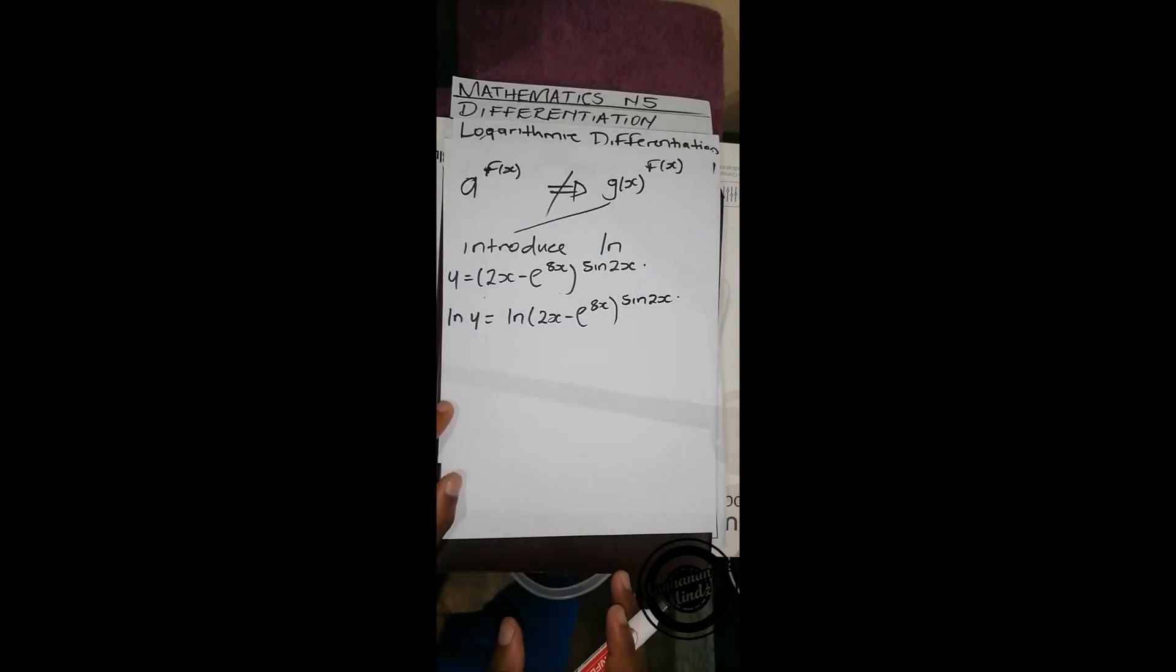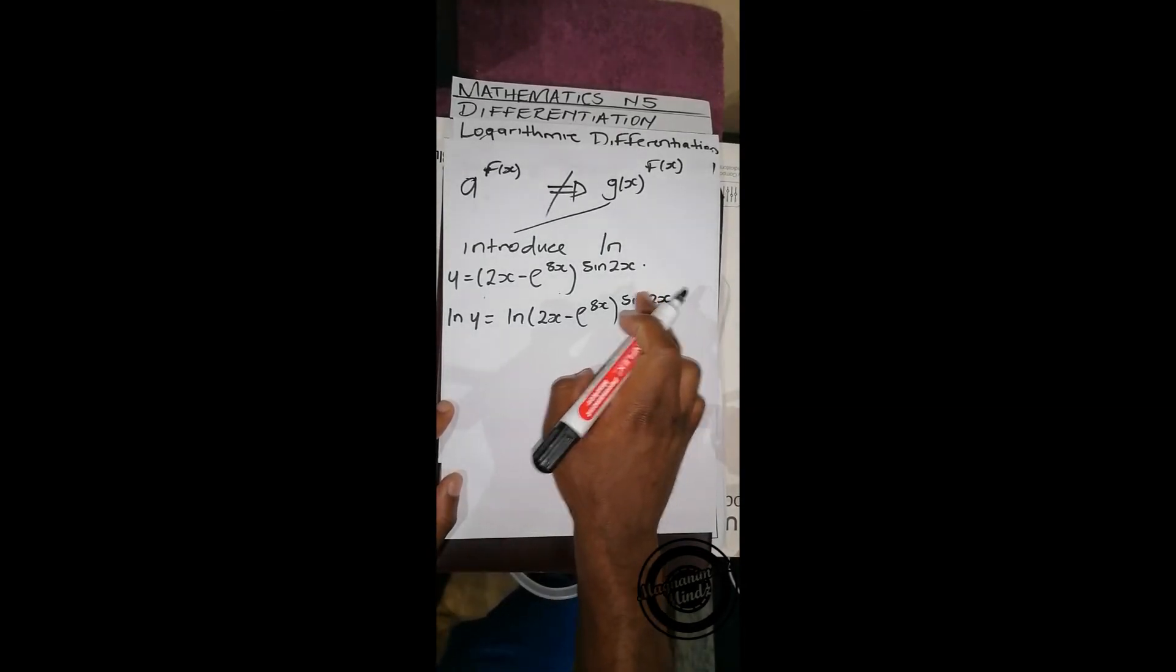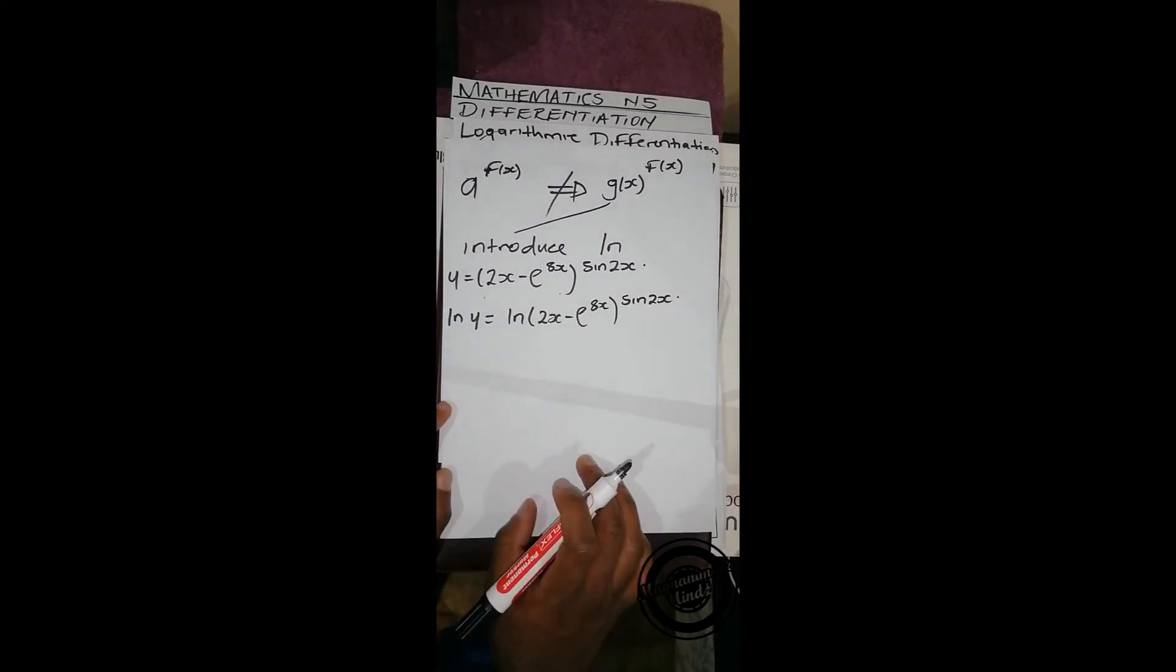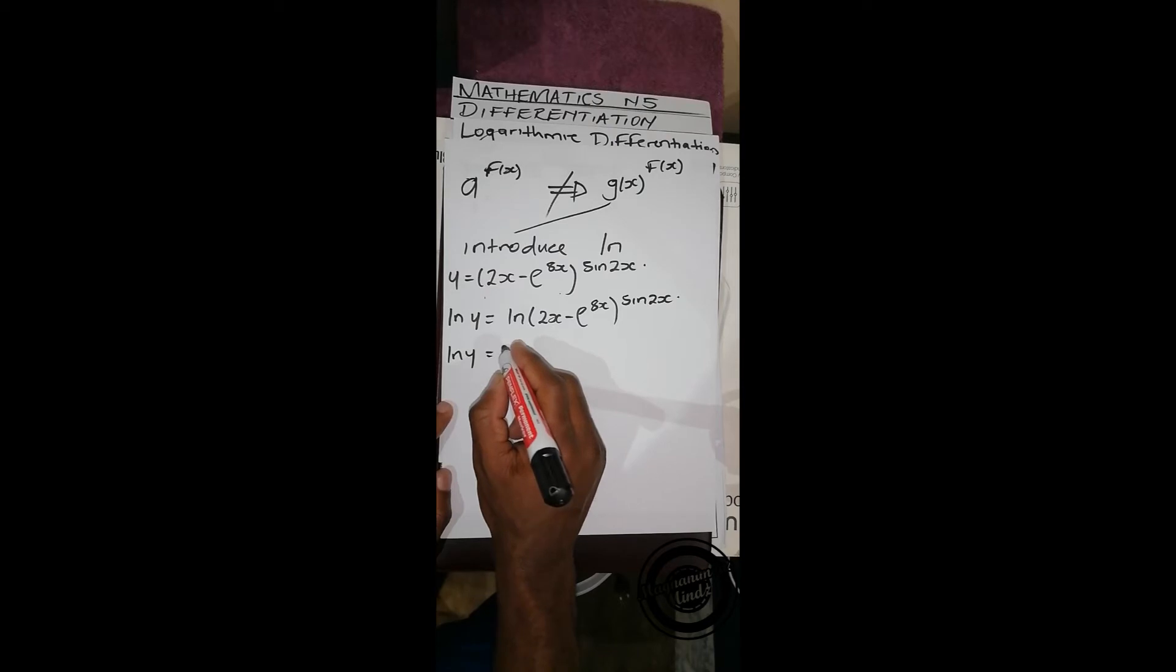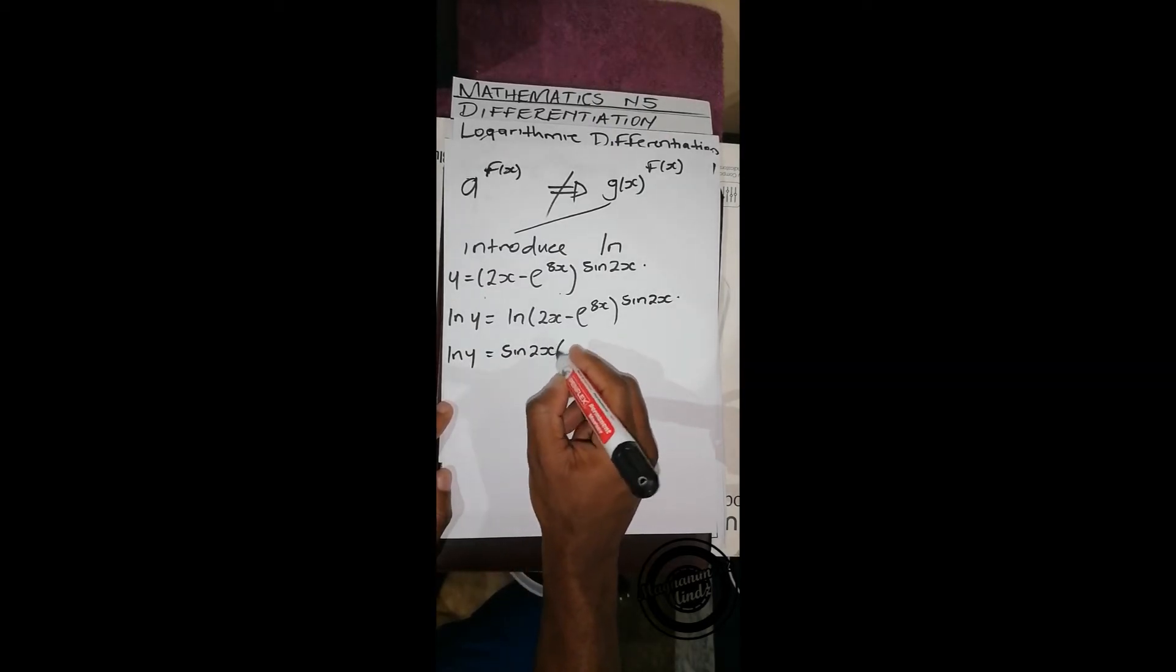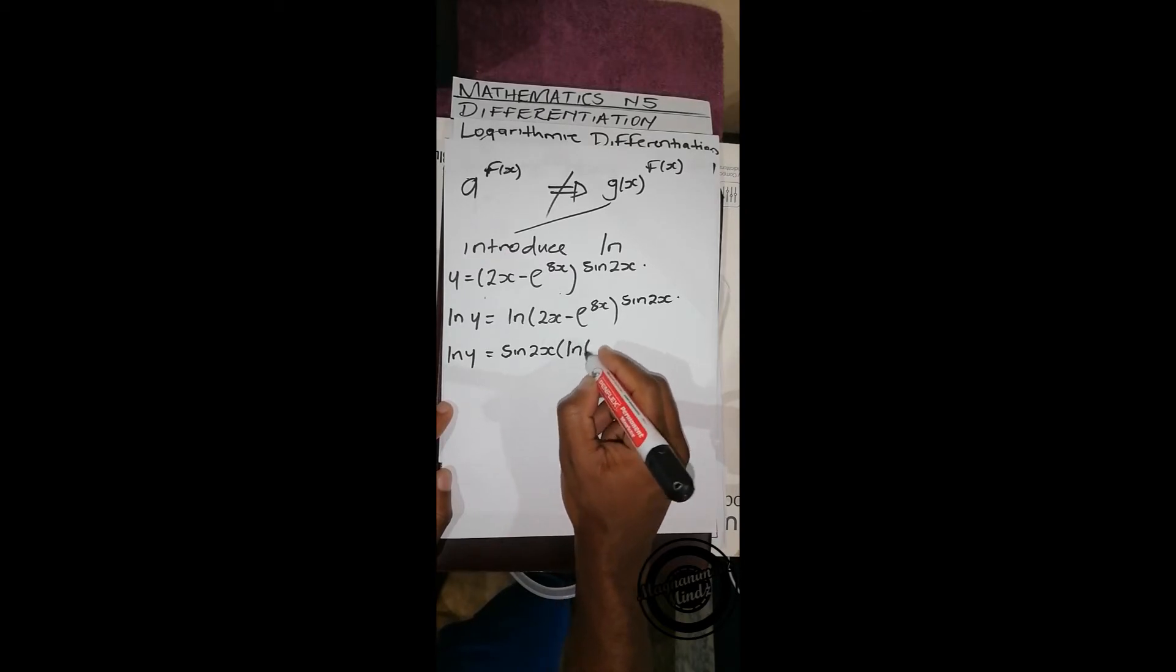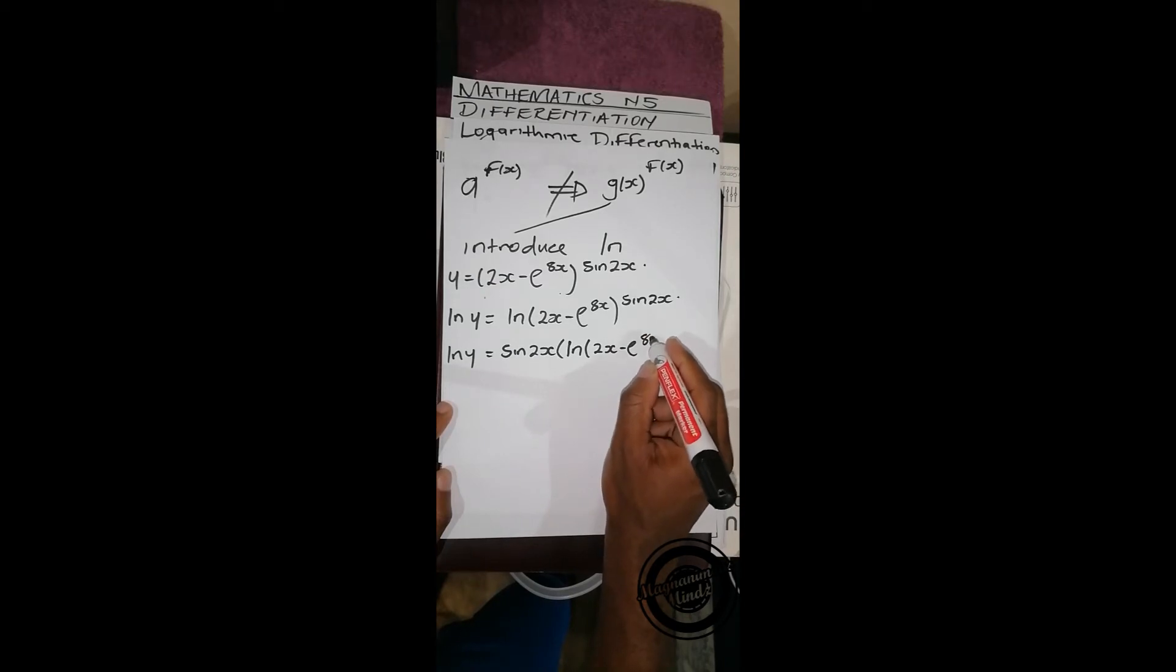Then using logarithmic laws, we can take this and put it behind this ln. So it's going to be ln y equals sin 2x times ln(2x - e^(8x)).